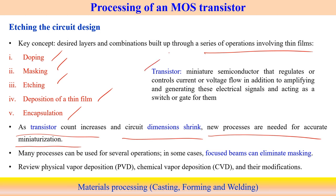Over recent years, through miniaturization, lots of functions can be controlled by transistors on one circuit board — increment of transistor count but decrement of total chip size. This requires shifting from old conventional techniques to more accurate and advanced technology. In some cases, a focused beam can be used in processing material, specifically in circuit design, to control very localized areas and eliminate the need for masking.